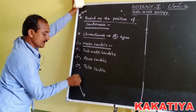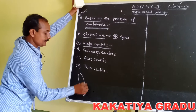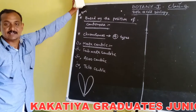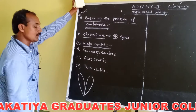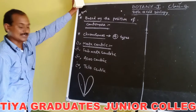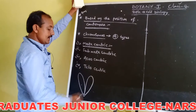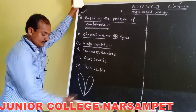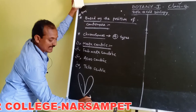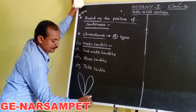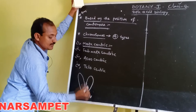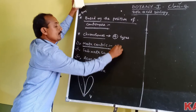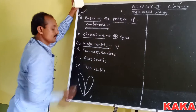The centromere is located at the center of the chromosome and it consists of two equal chromatids, or two equal arms. Hence, during anaphase, the chromosome appears V-shaped. V-shaped chromosomes are called metacentric chromosomes.